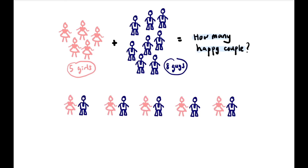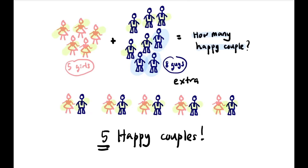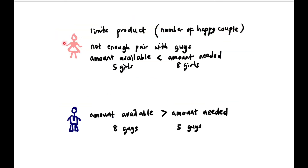We got five happy couples — all five girls are involved and only five guys are involved, giving us five happy couples. What about the other three extra guys? Since girls limit the product we produce (the number of happy couples) because they don't have enough to pair with guys, the amount available is five girls but we need eight girls to complete. Because the amount available is less than the amount needed, the girl is called the limiting reactant.